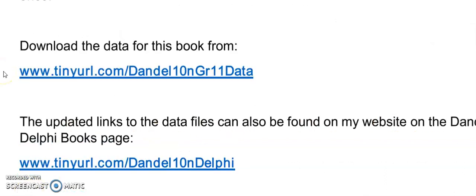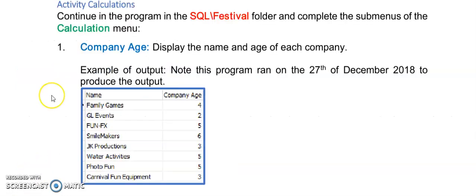If you want to practice with us and you haven't done this before, you need to go to this link here and just download the data files for the next program. Now's your time to practice - we're moving on to the menu called Calculations, and in that main menu there are submenus. First do the Company Age menu.